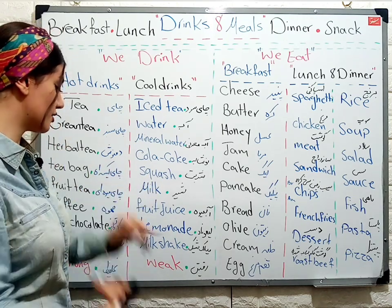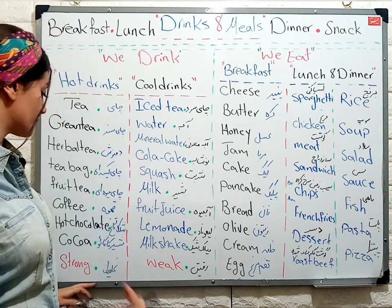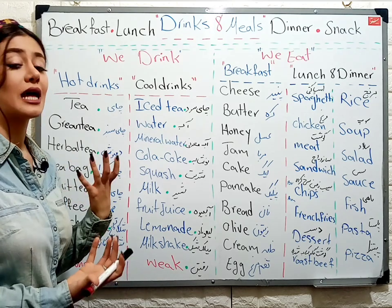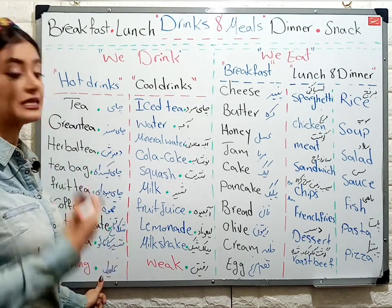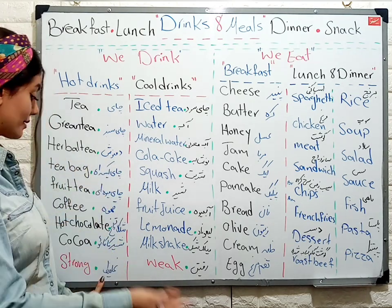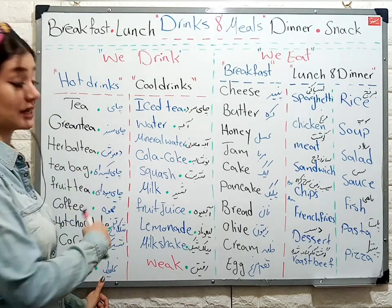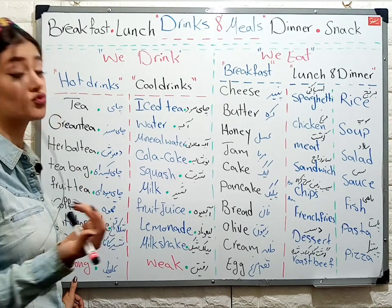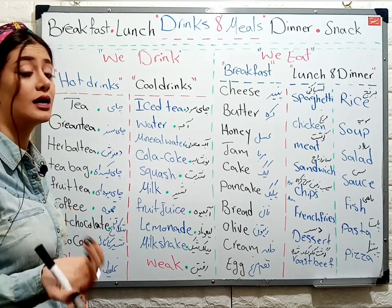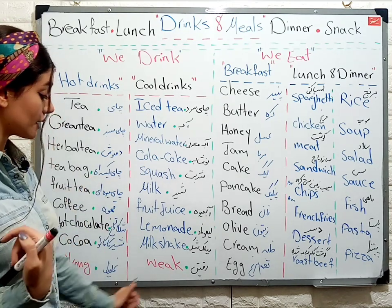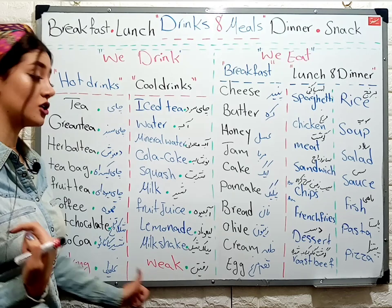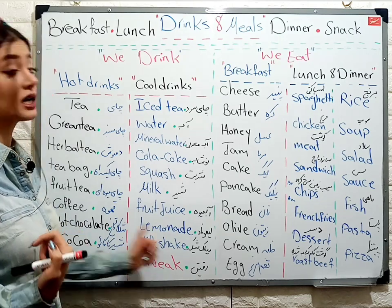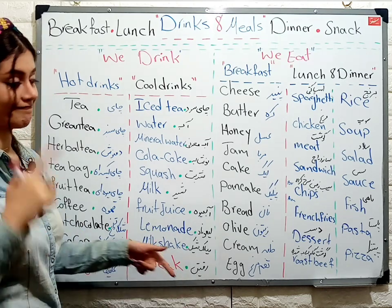And these two words: if a drink is thick or concentrated, for example I prefer hot chocolate very thick, we say 'strong.' If it's diluted or thin, we say 'weak.' Strong, weak.